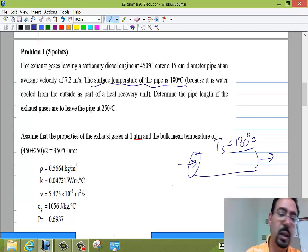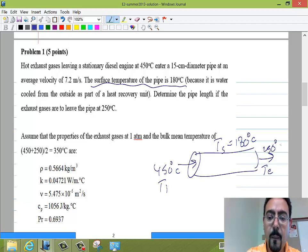And those gases are coming at 450, so this is T_i, and it's leaving at 250. And he said the velocity here was 7.2 meters per second, so that's V, and the pipe diameter is given. So 15 centimeter pipe.